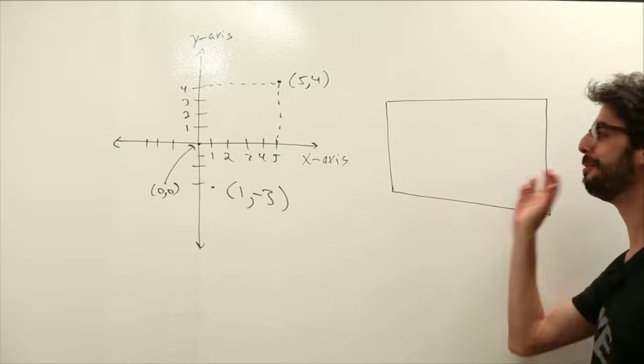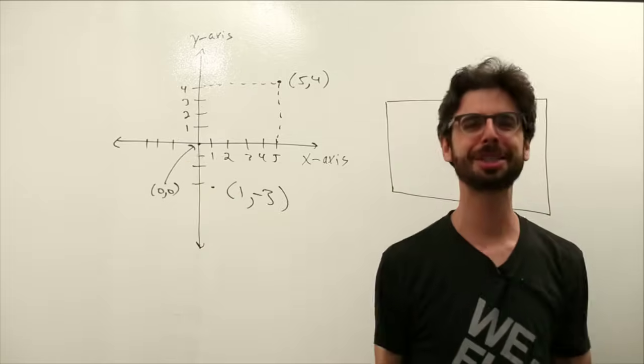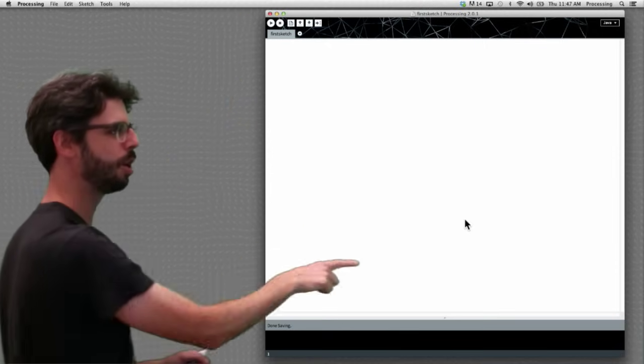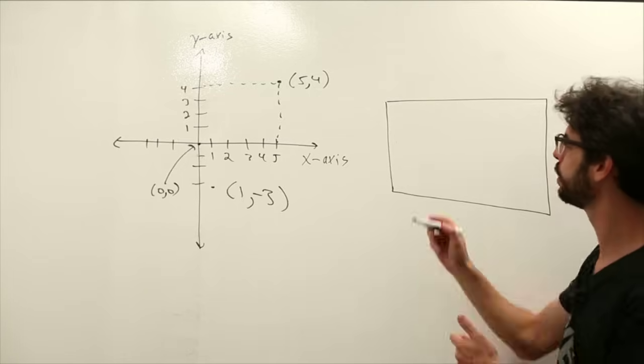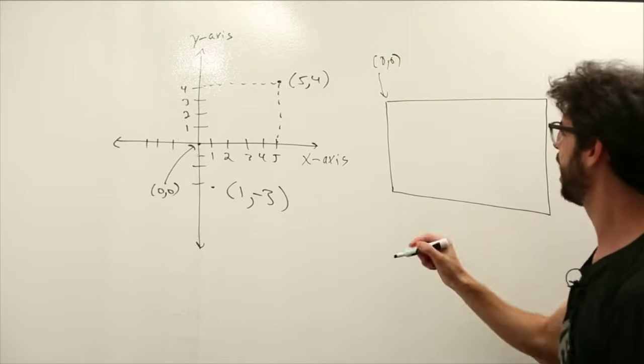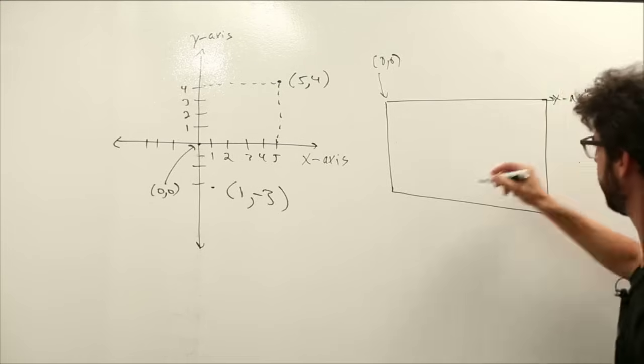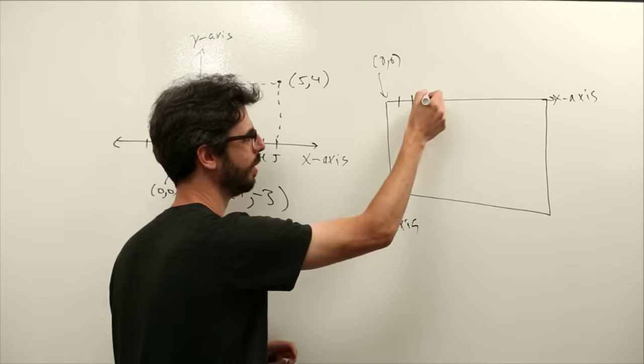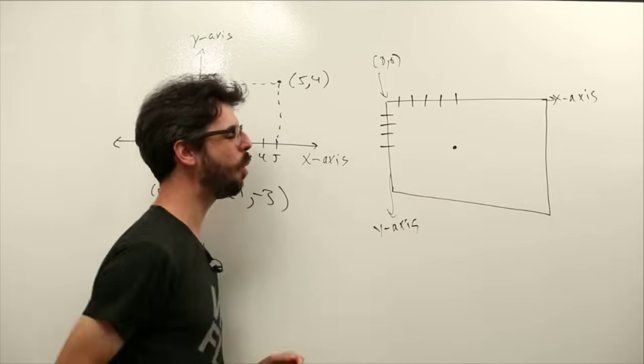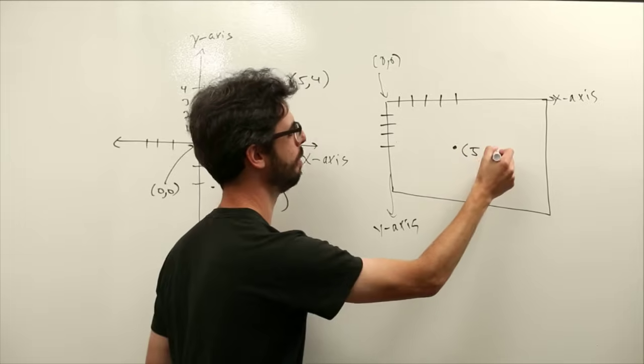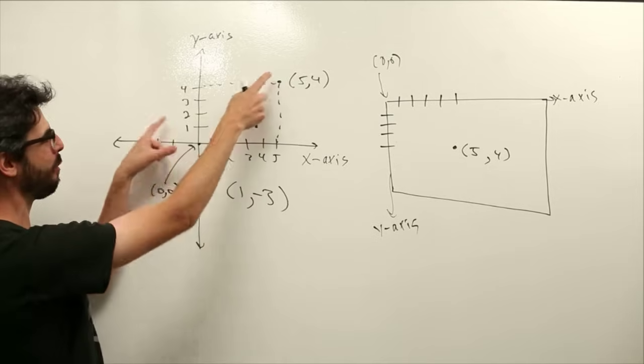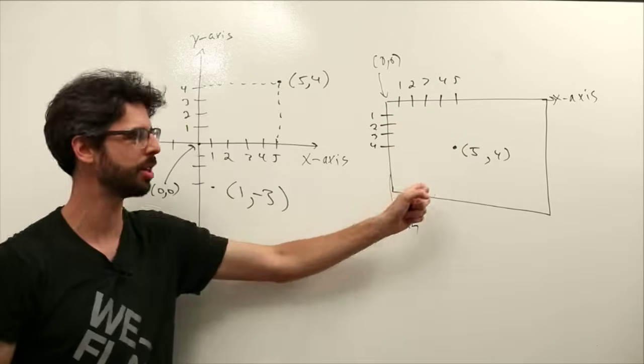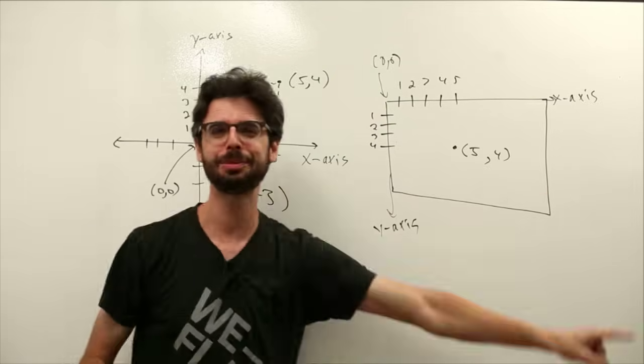Now in computer graphics, we have something similar to this, but flipped and with 0, 0 in a different place. The top left of any computer graphics window is the origin, 0, 0. This is the x-axis going this way, and this is the y-axis going this way. This is the point 5, 4. Y is positive pointing down, x is positive pointing to the right.